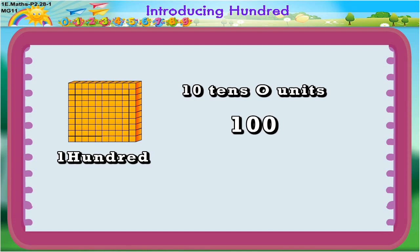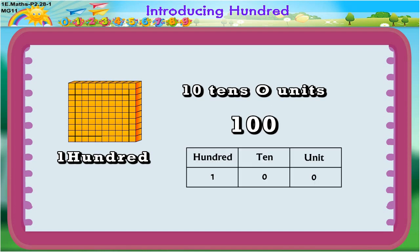It is written as 1-0-0. Look at this figure — it contains 1 hundred, 0 tens, and 0 units, written as 100. One hundred.